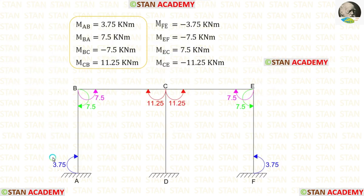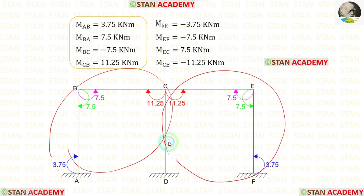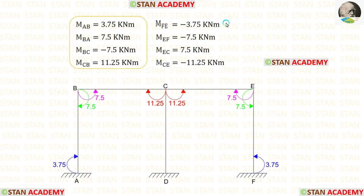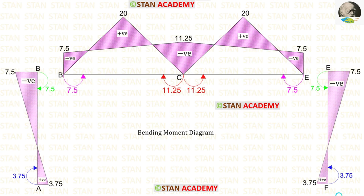We have calculated the moments on the left side. Now let us find the moments on the right side. The values of the moments on the left and right sides will be the same, but in opposite directions. To find the moments on the right side, we just change the sign of these moments. Due to the symmetrical nature of the frame, in the column CE there will be no moment. Here you can see the bending moment diagram. Thank you for watching this video.